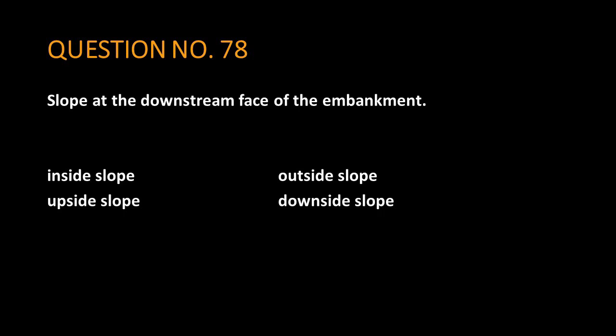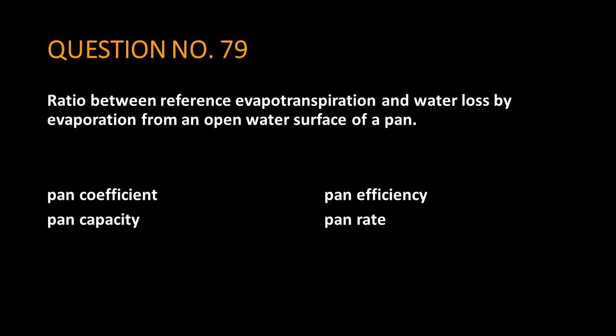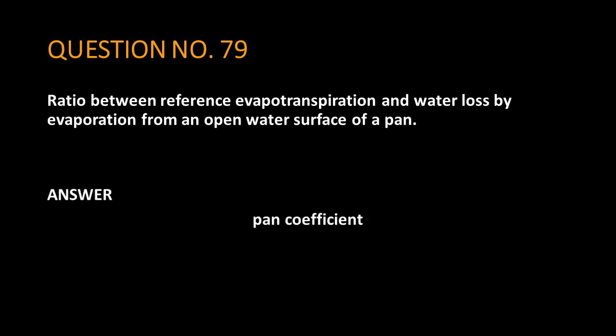Question number 78: slope at the downstream face of the embankment. The answer is: outside slope. Question number 79: ratio between reference evapotranspiration and water loss by evaporation from an open water surface of a pan. The answer is: pan coefficient.